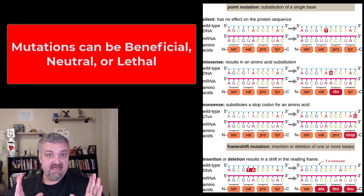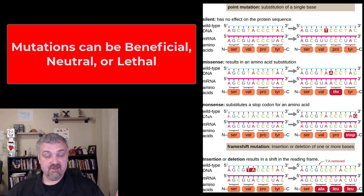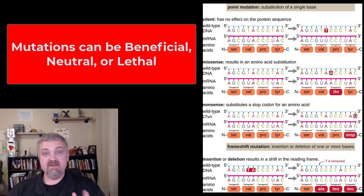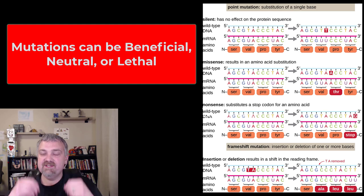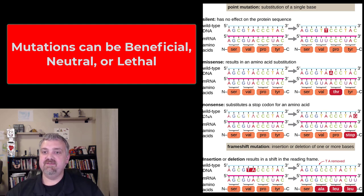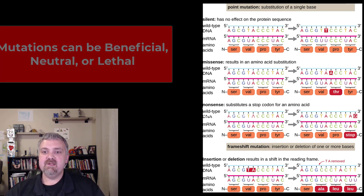Mutations can be beneficial if they increase your chances of surviving and reproducing. They can be lethal if they decrease it, or they can be neutral. Having some hair on your knuckles or free/fixed ear lobes — those things shouldn't play a big impact in your chances of survival.